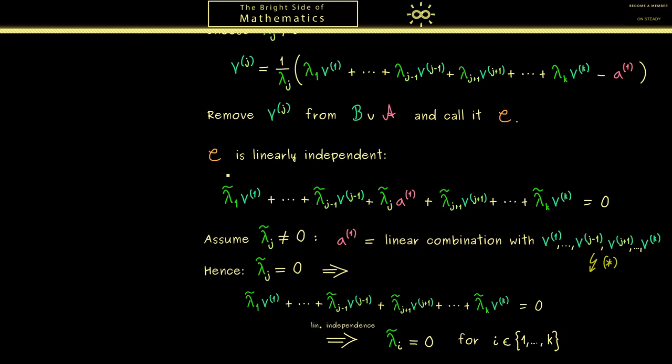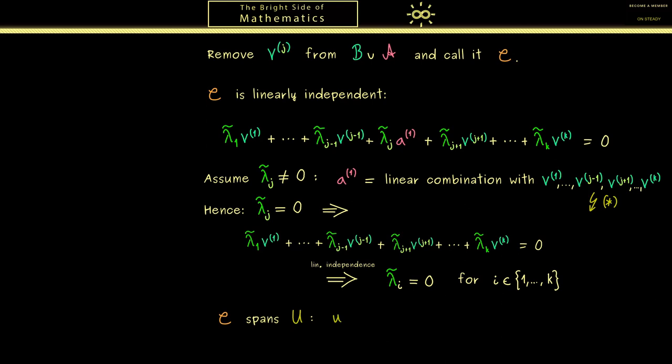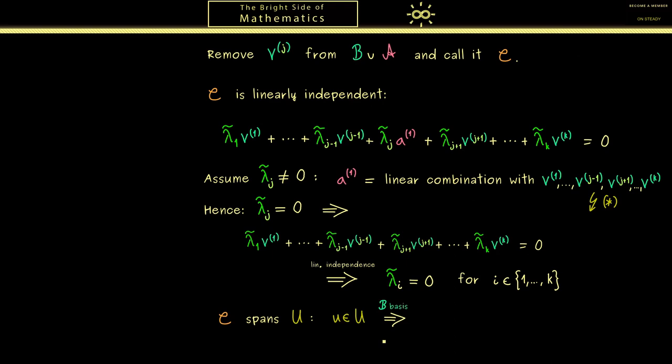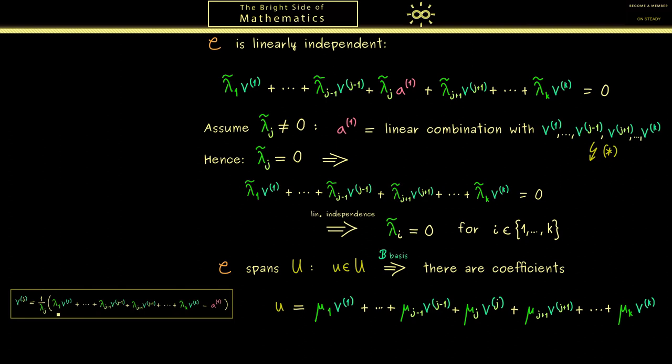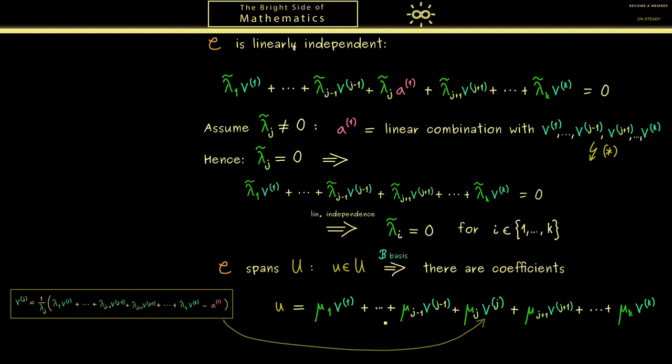Therefore, the last thing to show here is that C also spans the whole subspace U. And in order to show this, I would say let's choose an arbitrary vector u in our subspace. And there we can use that B is a basis, which means it spans the vector space U. So there are coefficients which I now call mu_1 to mu_k. And there you see, the only thing we have to change here is now that we have to get rid of v^j in the middle. So you know, instead of our v^j, we now want our a^1 here. However, this is not a problem at all if you recall our formula for v^j from above. This means that we can simply substitute v^j here on the right-hand side. And what we get is just a linear combination with the remaining v's and a^1. Of course, it's not important to know how we can calculate all the coefficients. It's just important that we have them. Therefore, I call them mu tilde here.